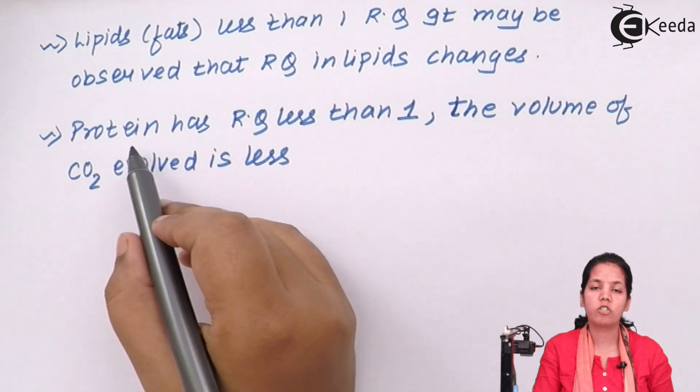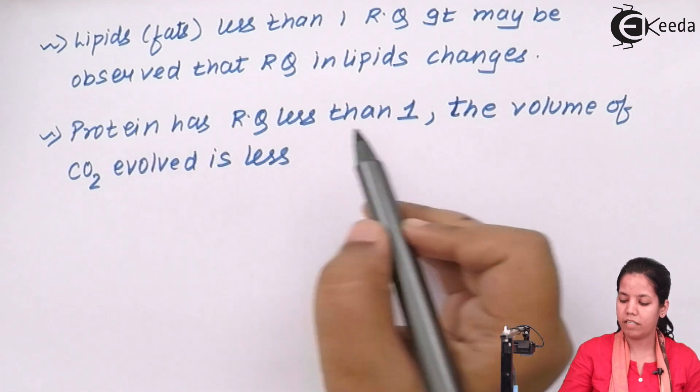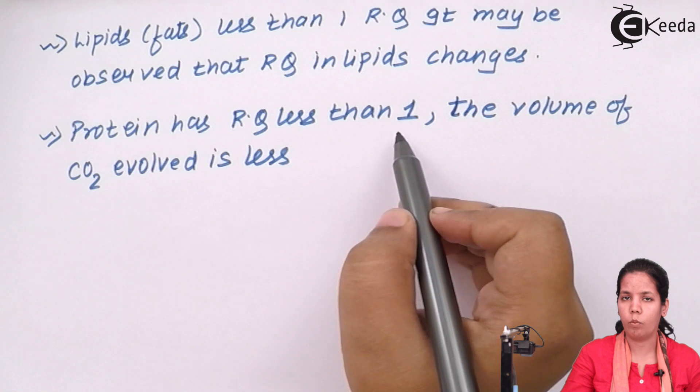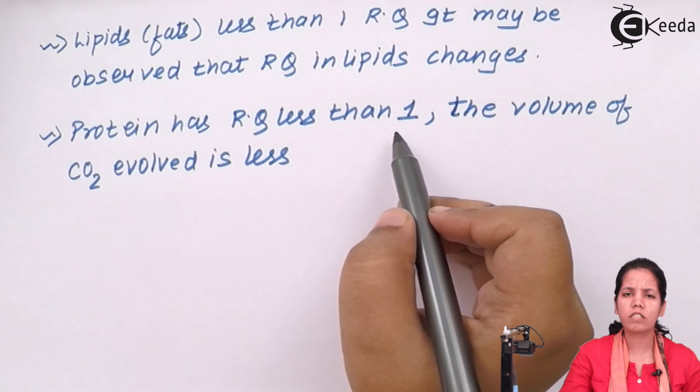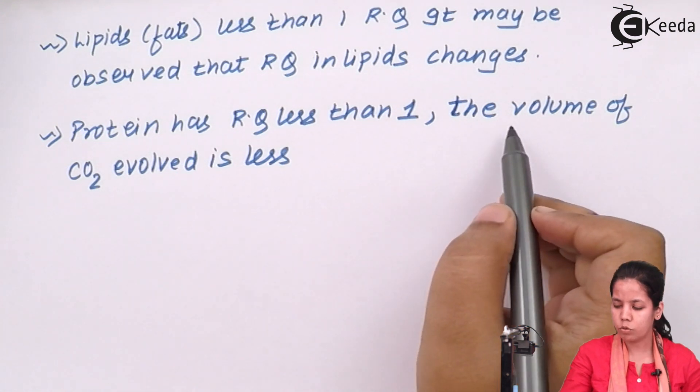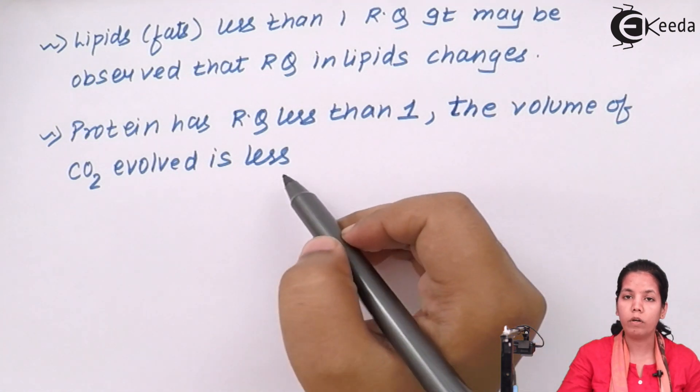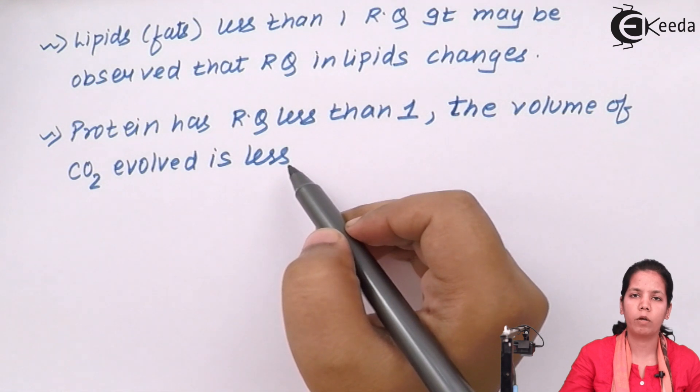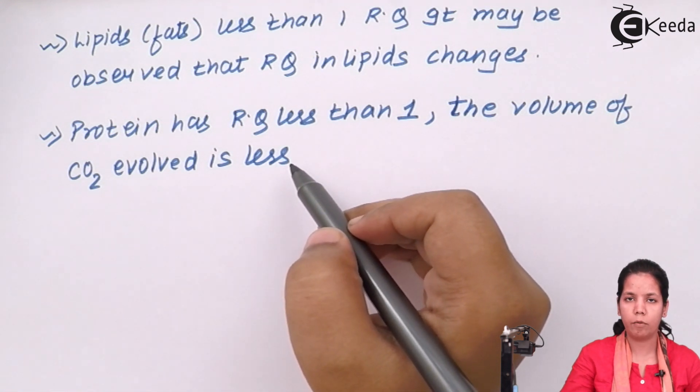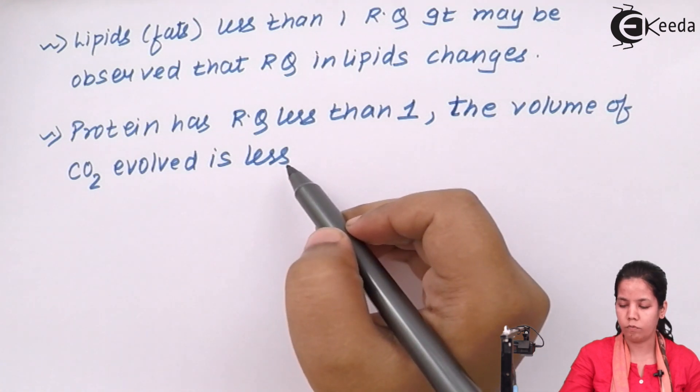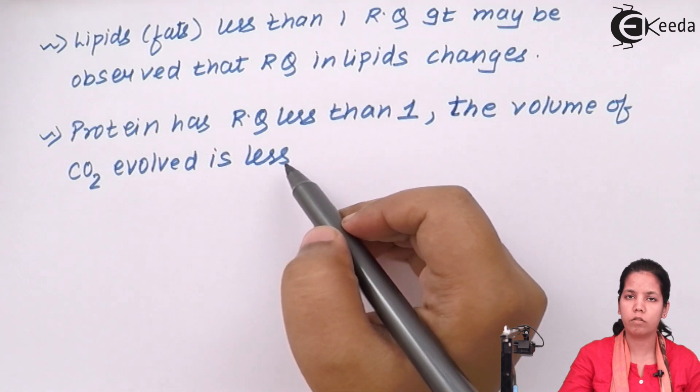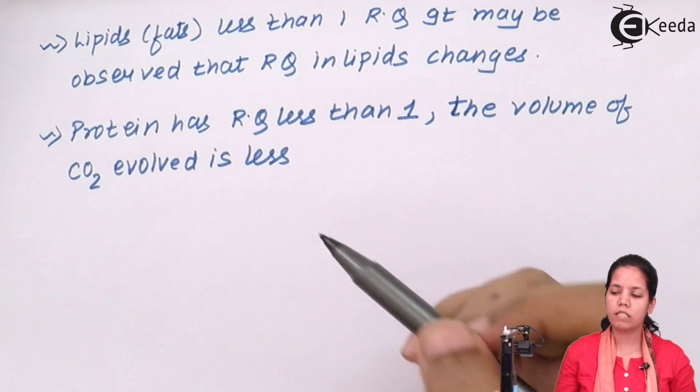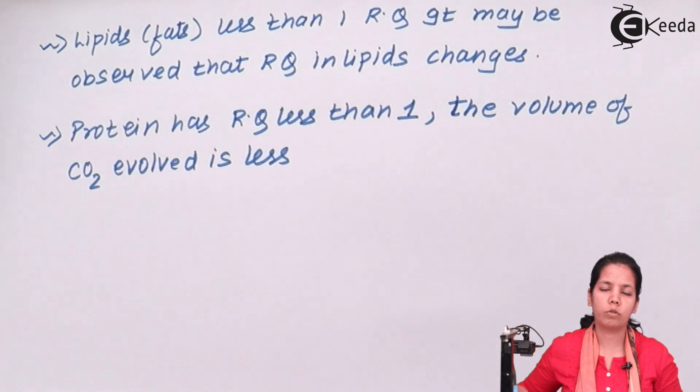Whereas in the case of proteins - that is, chains of polypeptides - they have a respiratory quotient which is less than one, approximately 0.8 to 0.9. This is due to the volume of less CO2 evolved during the process of protein metabolism, especially during ammonification. In protein metabolism, less CO2 is involved, and if less CO2 is evolved, then it will have an effect on the amount of O2 that is used in the process.